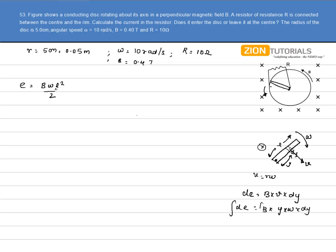Integrating both sides, the value of y varies from 0 to R. I get the answer is B omega R square by 2. So I am using this very same formula over here.